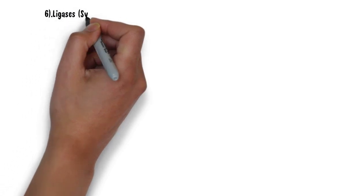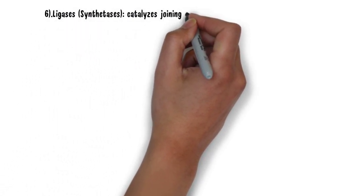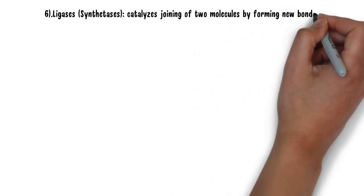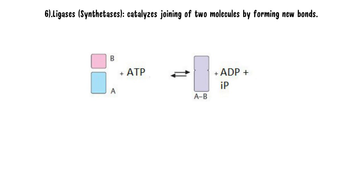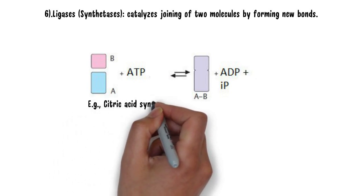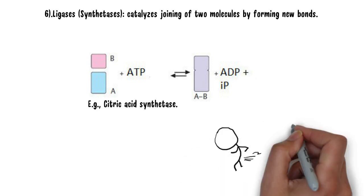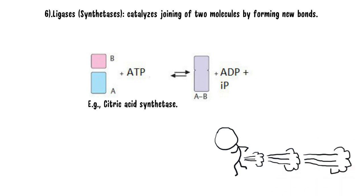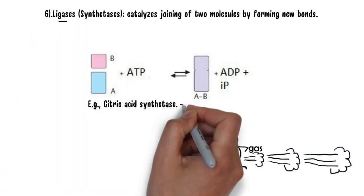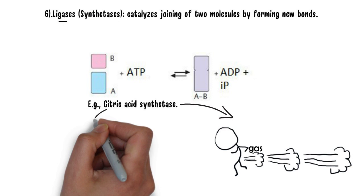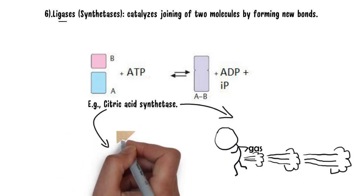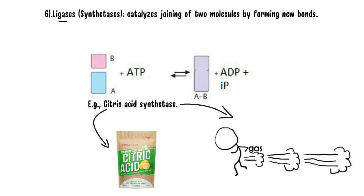The last category of enzymes is ligases, or synthetases. These enzymes catalyze the joining of two molecules by forming new bonds. The example is citric acid synthetase. 'Synthetase' will help you remember that this is an example of synthetases. To remember ligases, just relate it with the word 'gas' — when you have too much citric acid, you will have gastric trouble. So 'gas' will help you remember ligases, and 'citric acid' will help you remember citric acid synthetase.